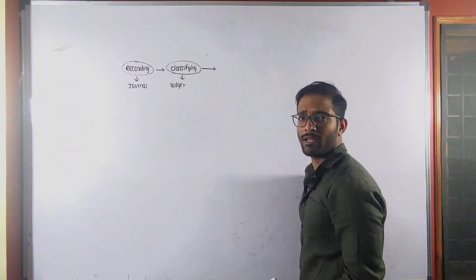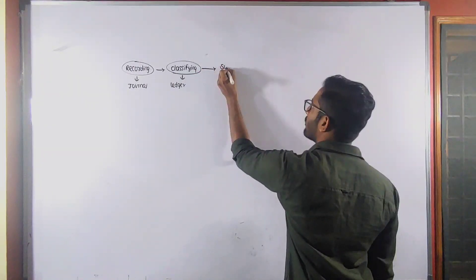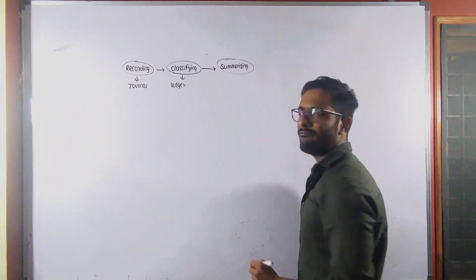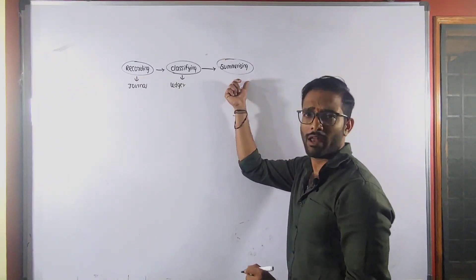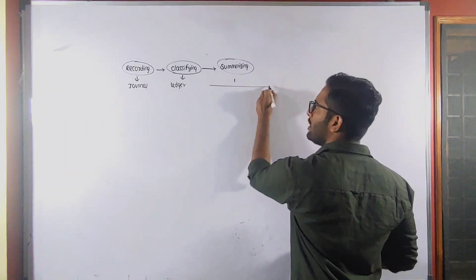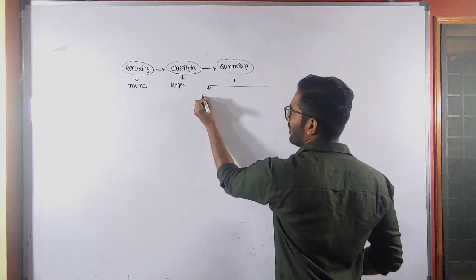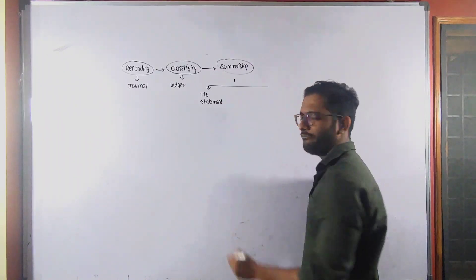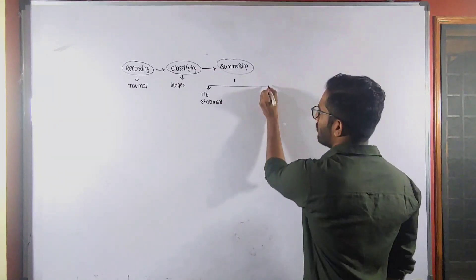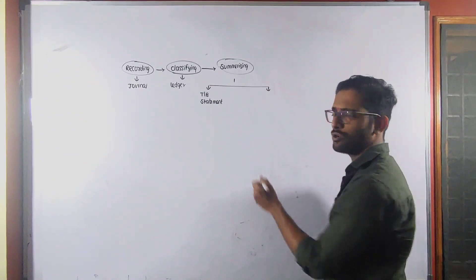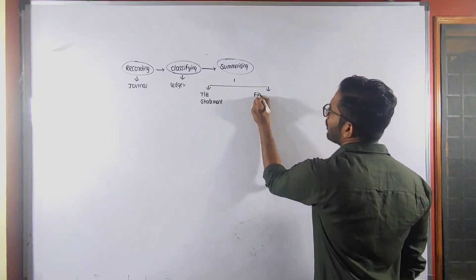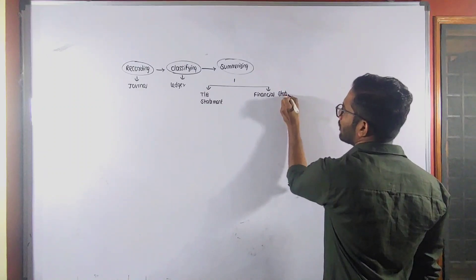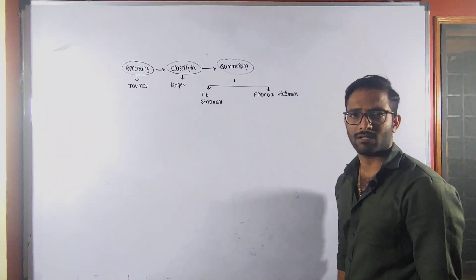The third process of accounting is summarizing. It is the stage where all the ledger accounts are recorded. The first step of summarizing is the preparation of a trial balance statement, and the second step of summarizing is the preparation of financial statements.